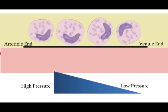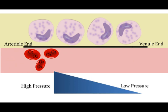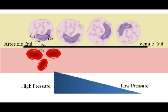Red blood cells in the blood stream bring in lots of oxygen, so the oxygen levels here are in a high concentration. Inside the cells the oxygen is in a low concentration as it is being used up in respiration. The oxygen therefore diffuses from the blood into the tissue fluid and then into the cells.